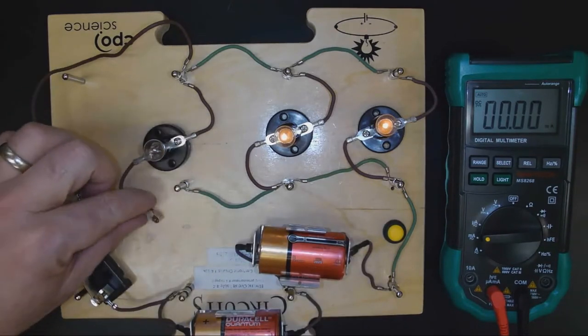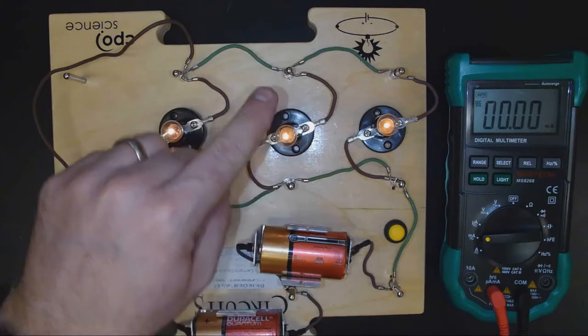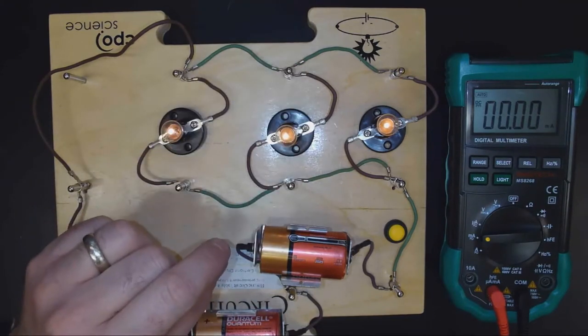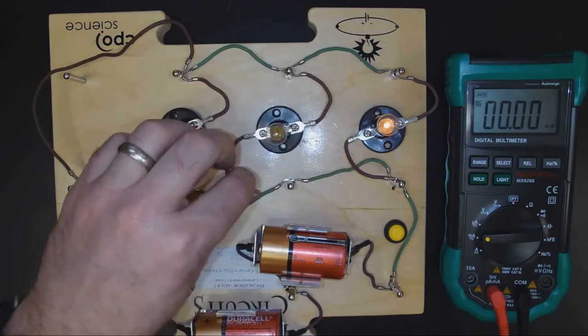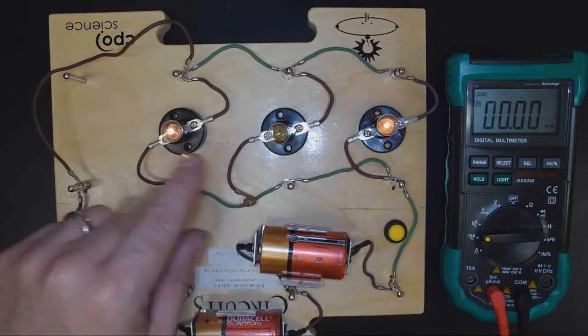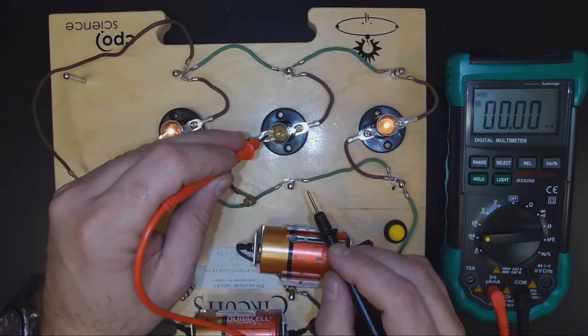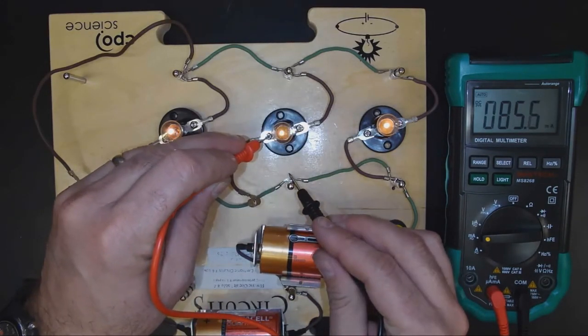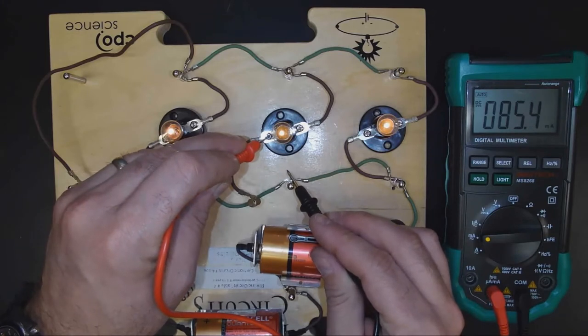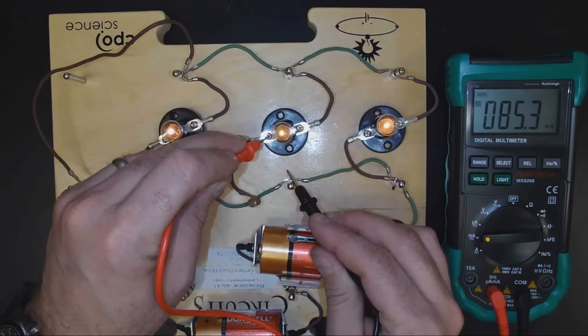Okay, so that's for light bulb one. Now I'm going to replace that, and now let's measure the current down light bulb number two. So I'm going to remove the wire, and notice that light bulb two goes out. I'm going to measure from here to here, light bulb goes on, and I get 85.3 milliamps.